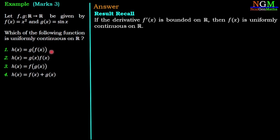Out of these four functions if we are able to find at least one function whose derivative is bounded then that function will be the uniformly continuous function. So we will check all the options one by one.